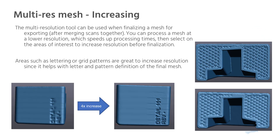The multi-res tool only affects the final mesh, not the point density. Typically, a mesh will be processed entirely in a single resolution. By using the multi-res tool, we can highlight just the areas of our mesh we want to increase the resolution without having to reprocess the entire mesh. This is dependent on the amount of points within the raw data, however. If you increase a mesh in an area that has low point density, it will appear rougher, similar to the three mesh examples shown earlier. By adding additional scans to the area, we can increase the density of points, allowing us to process lettering or patterns at a higher resolution since we have more data to work with.